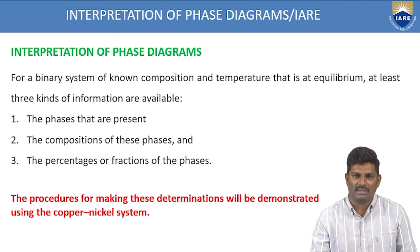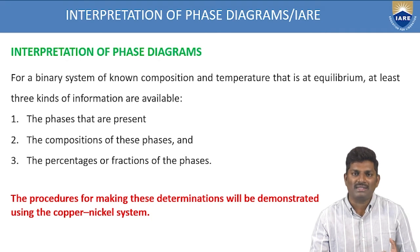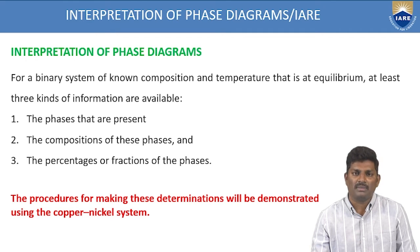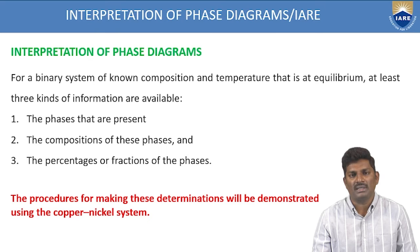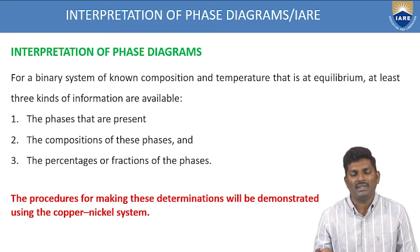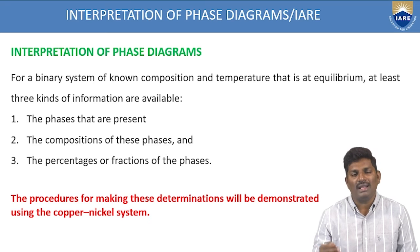Based upon these three parameters, we will see how to interpret the phase diagrams one by one. For a binary system — if two parameters from the three (temperature, pressure, and composition) are varied and the other is constant, that type of system is called a binary phase system. In this binary system, composition and temperature are at equilibrium and pressure is kept constant.